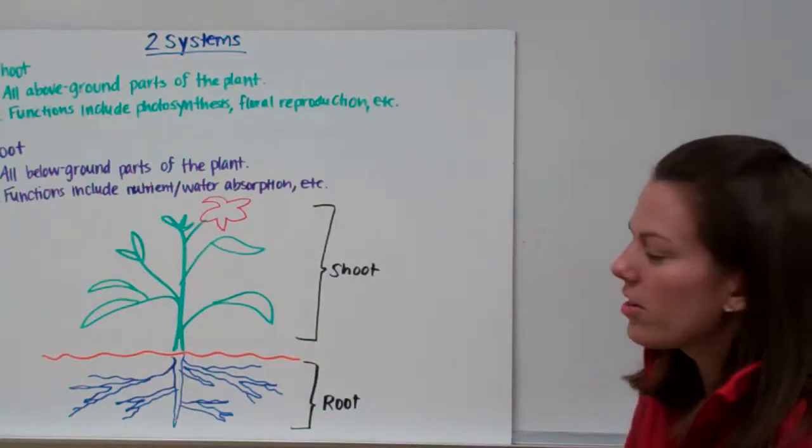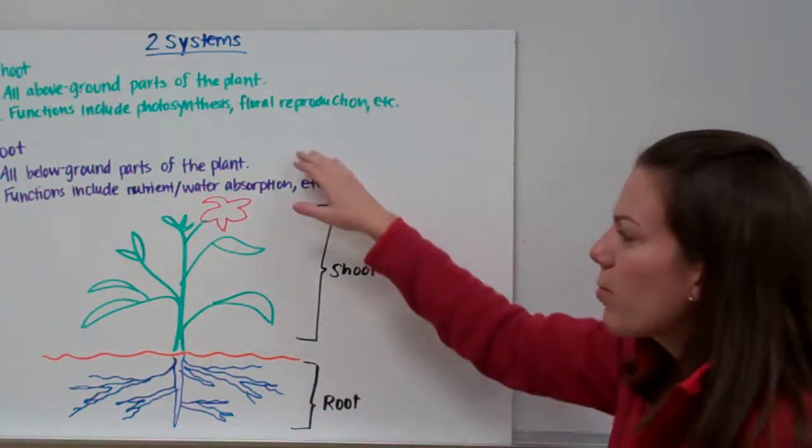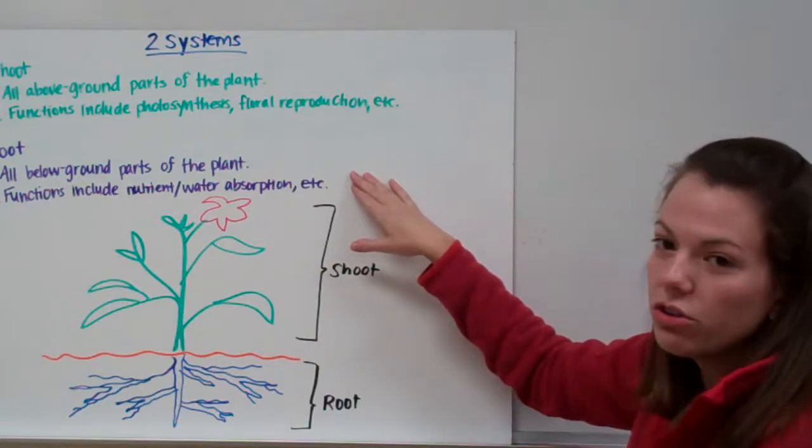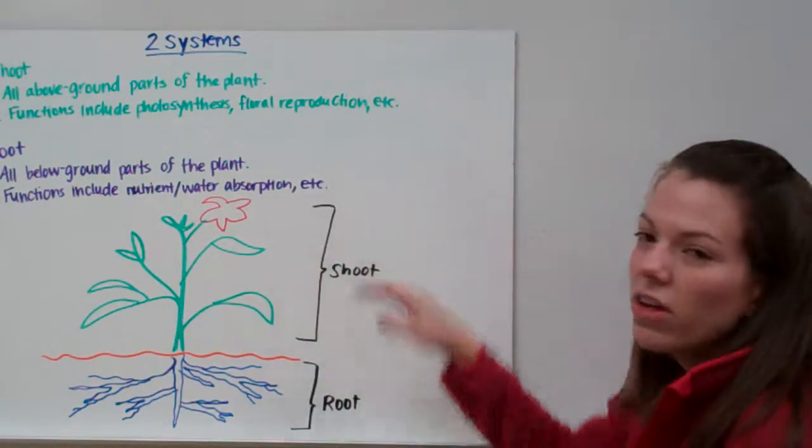And then the below-ground elements are called the root. The root comprises all below-ground elements. And its functions include nutrient and water absorption from the soil and other things.